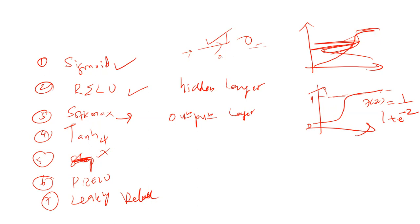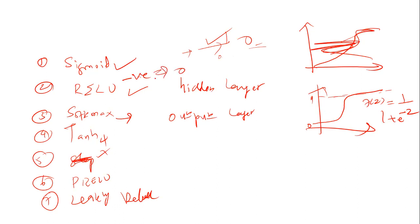The challenge with ReLU is the negative values become 0 — it simply converts all negative values to 0. That is the problem with ReLU. Any value above 0 will remain as it is. For example, if it is 255, it will remain 255. But if it has anything less than 0 — a negative value — it will convert it to 0 blindly. So what is the problem if it converts any negative value to 0? It will decrease the deep learning model's ability to train the data properly — they are suppressing the information. To solve this problem, they came up with something called Leaky ReLU.